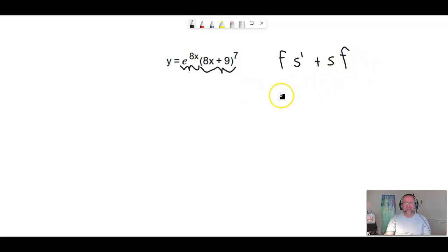Now in this case I think it would be easier to go ahead and identify what all of these are. And I'll do this off to the left here. So the first equation is just e to the 8x. The second equation is going to be equal to 8x plus 9 raised to the 7th power.